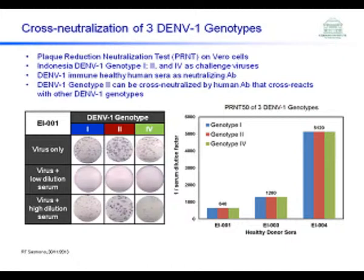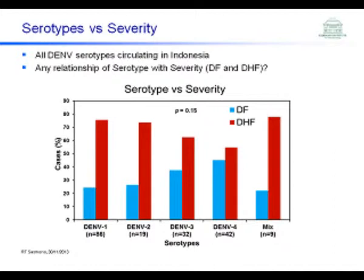We performed a PRNT test on the genotype using genotype 1, 2, and 4 viruses as the challenge virus, and healthy human sera with genotype 1 immunity as the neutralizing antibodies. Looking at the data, using these three viruses, antibodies from healthy humans can still neutralize all of the viruses. This is actually good news for vaccine development, because even peculiar genotypes can still be neutralized by human antibodies. The three healthy human samples all showed similar dilution titers of sera to neutralize the viruses.